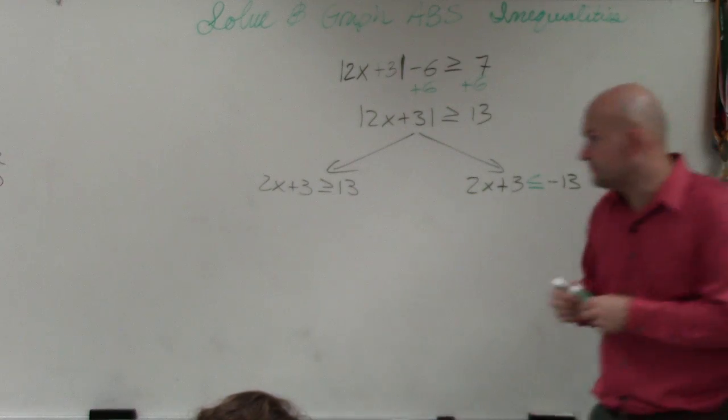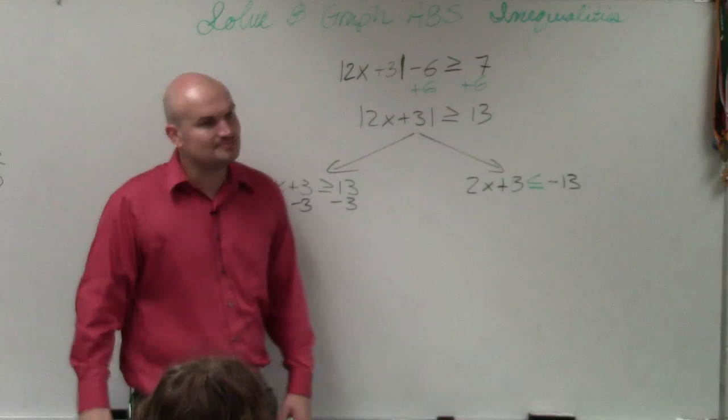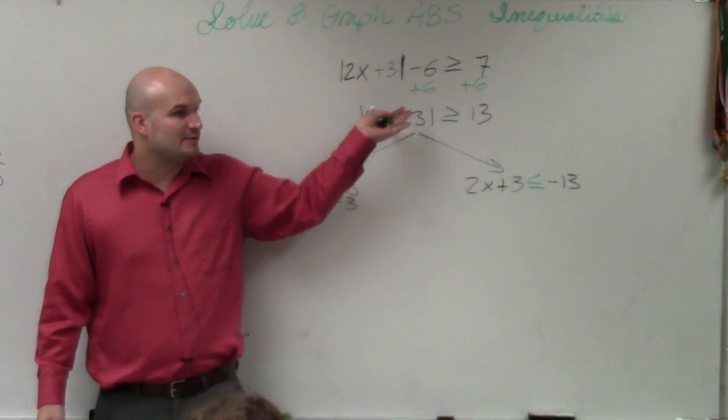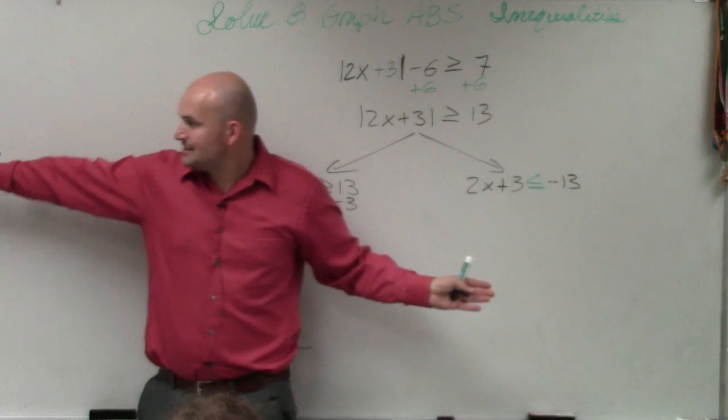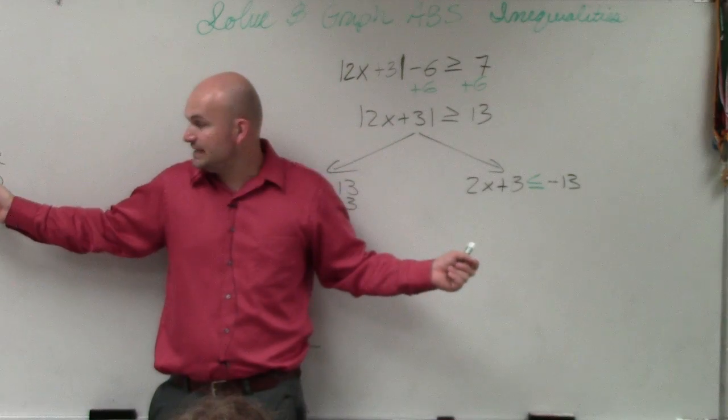So now we just solve like we've done before. Subtract 3. Oh, I'm sorry. I messed up. I didn't mess up, but I kind of went too fast. So we have absolute value. We create our two cases. In step number two, when you create your two cases, case number two, flip the sign and negate, which I did.